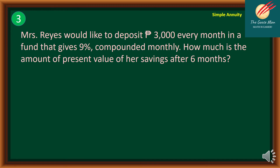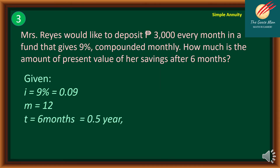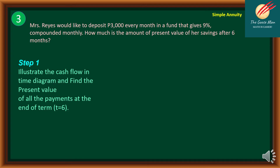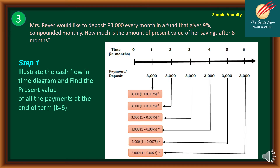Now that we know how to calculate the future value of an annuity, let's move on to the present value. Consider problem number 3. Mrs. Reyes would like to deposit P3,000 every month in a fund that gives 9% compounded monthly. How much is the present value of her savings after 6 months? The given are: I = 9%, M = 12, T = 6 months or 0.5 year, R = 3,000. We want to find the present value P.